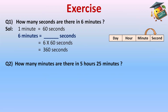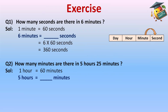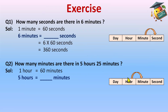Question 2: How many minutes are there in 5 hours and 25 minutes? The relation between minutes and hours: one hour equals 60 minutes. Since 25 minutes is already in minutes, we just need to convert 5 hours into minutes. Using the mnemonic table — Day, Hour, Minute, Second — going from hour to minutes is moving forward, so we multiply by 60.